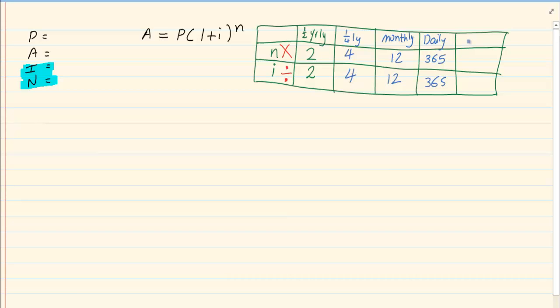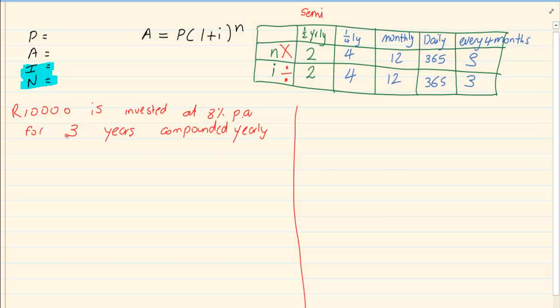Then what they could do is they could say every 4 months. Now if you take every 4 months, it means that they are actually calculating the interest 3 times a year. So it would be in April, in August and then in December. Another common word for half yearly is they tend to use the word semi-annually. Semi-annually is exactly the same thing as half yearly.